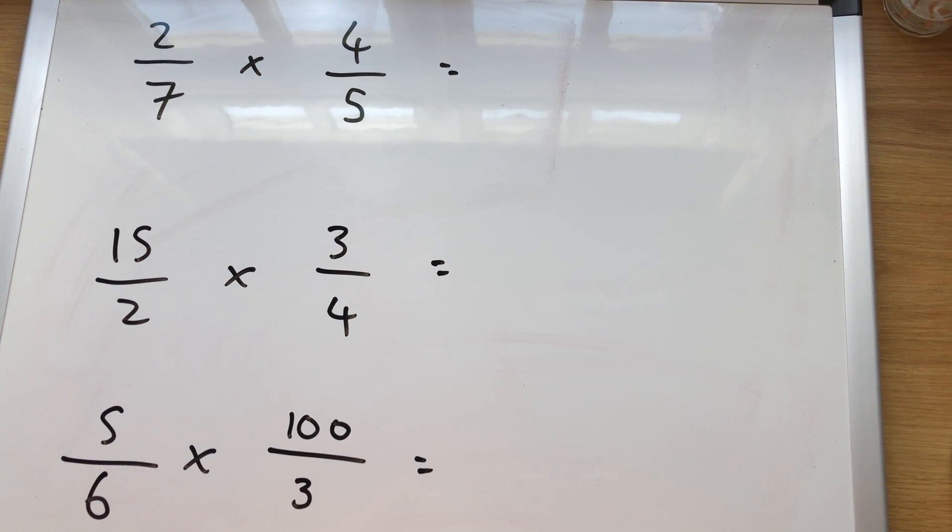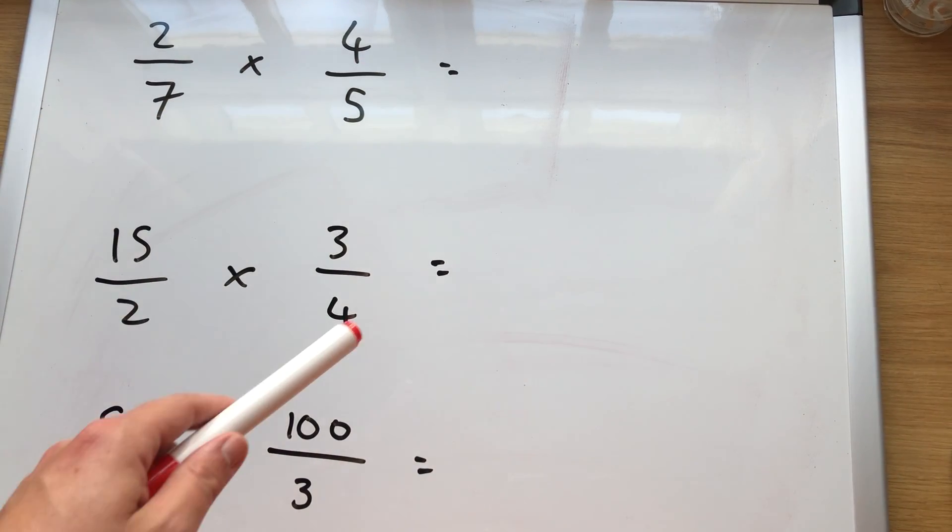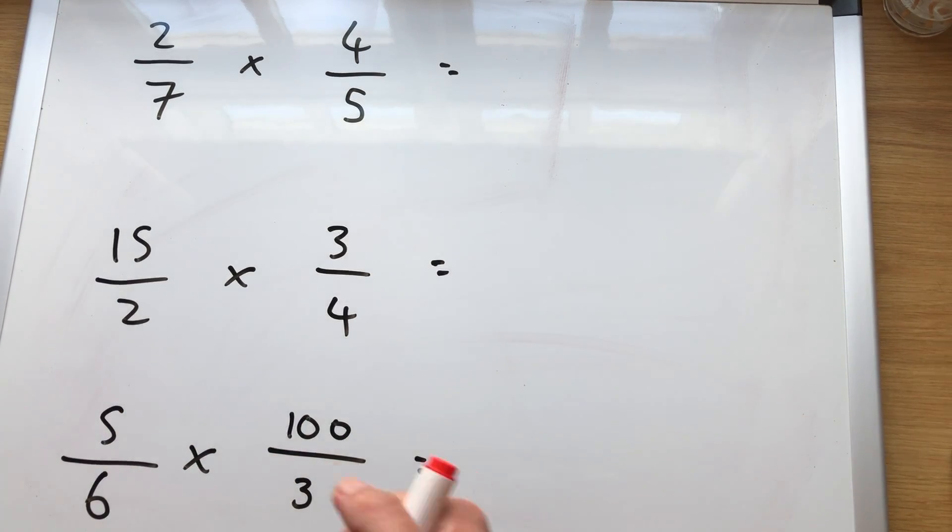Actually, multiplication is the easiest, easiest, easiest thing that you can possibly do with fractions because there's two steps to it. Multiply the top, multiply the bottom. Multiply the top, multiply the bottom.